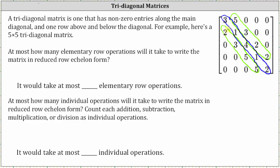At most, how many elementary row operations will it take to write the matrix in reduced row echelon form? To write the matrix in reduced row echelon form, we would need ones along the main diagonal and zeros above and below the ones.